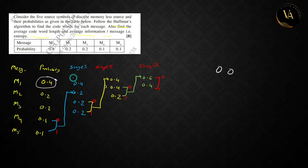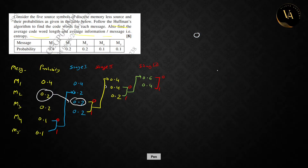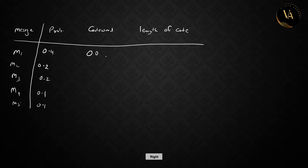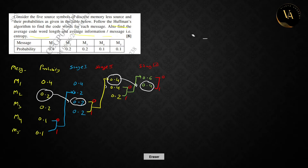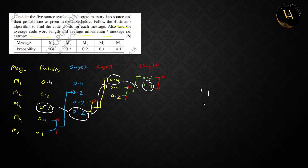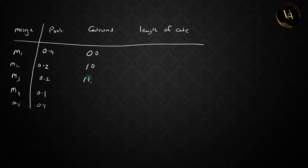For 0.2 and 0.2, no value is assigned at that node. The combined 0.4 gets value 0, and the other 0.4 gets value 1. Reading left to right: one zero — so the code word for that branch is '10'. Similarly, for the next 0.2, value assigned is 1; for 0.4, value assigned is 0; and for 0.1, value assigned gives '11'.